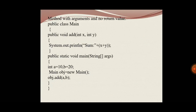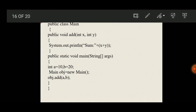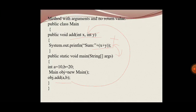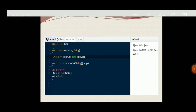Next is the method with argument and no return value. In this type, parameters are passed from the calling method to the called method, but no return value comes from the called method to the calling method. In this example, class Mine has add(int x, int y) with two parameters. The values 10 and 20 are passed while calling the method obj.add(10, 20), so the values are passed to x and y and the result is printed. It is a method with argument but no return type — no value is returned. The same program is executed and we have got the output.